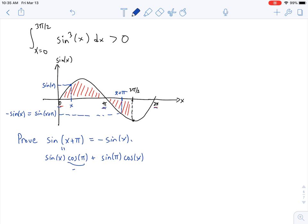Now, we know that the cosine of π is negative 1 and the sine of π is 0. And so this just simplifies to negative sine of x. Hey, that's what we wanted.